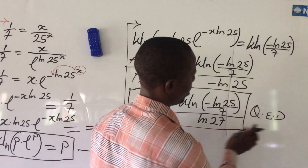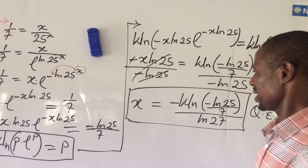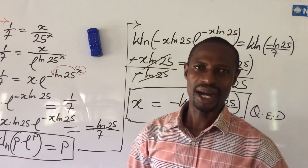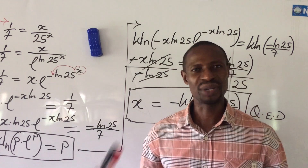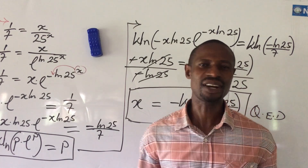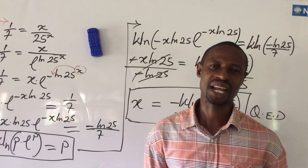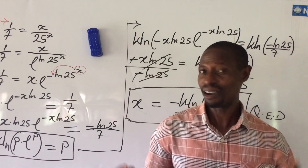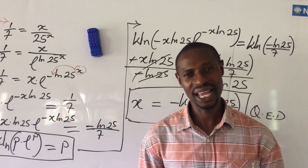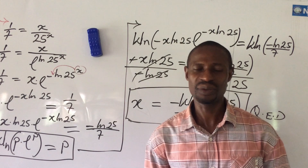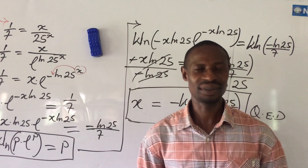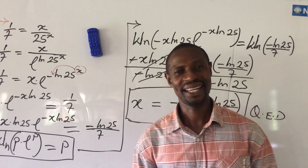QED. You can plug this into your Wolfram Alpha calculator to get the numerical value for x that satisfies our exponential equation. This marks the end of solving this exponential equation using the Lambert W function. If you learned something good from this video, give it a thumbs up and subscribe. This is All I Mass TV — my name is Jakes Anemo. Thanks for always being there. Bye for now.